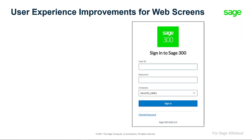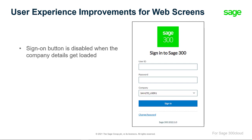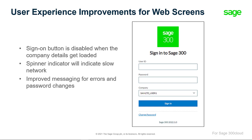The web screen's sign-on page has significantly improved to be more consistent with the other Sage solutions. Some of these changes include the sign-on button being disabled while the company details get loaded, a spinner indicating that a network is slow, and improved messaging for errors and password changes.